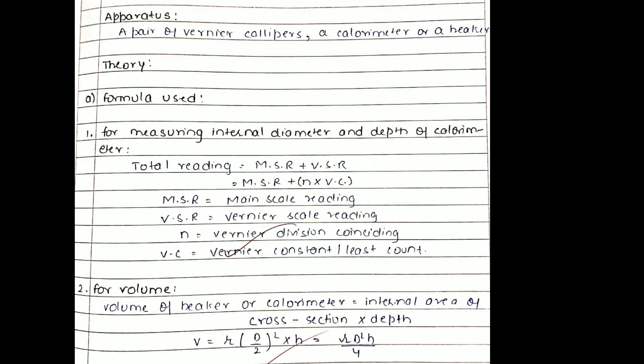For performing this experiment we need a pair of vernier calipers and a beaker. The formulas we are going to use are two formulas: first for measuring the internal diameter and for the depth. For the internal diameter we use the formula MSR plus VSR, which is MSR plus n into VC.